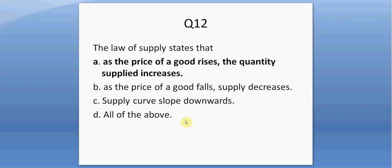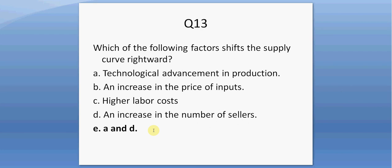Question twelve — some supply questions now. The law of supply states that A, as the price of a good rises, the quantity supplied increases. Question thirteen. Which of the following factors shifts the supply curve rightward? A and D — an increase in the number of sellers and technological advancements will shift supply rightward. Answer choices B and C will lead to a decrease in supply.